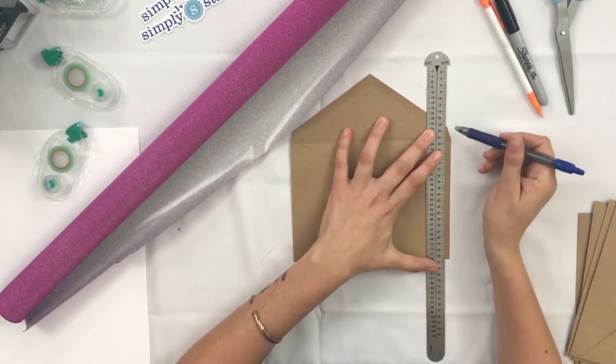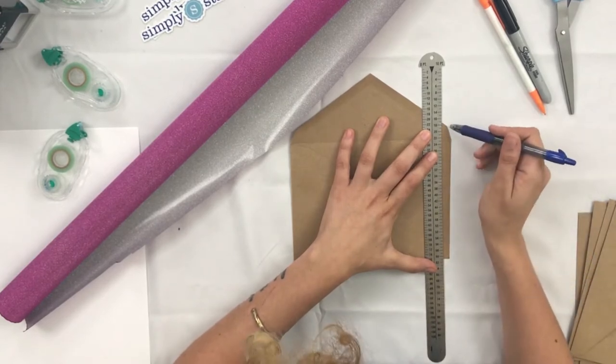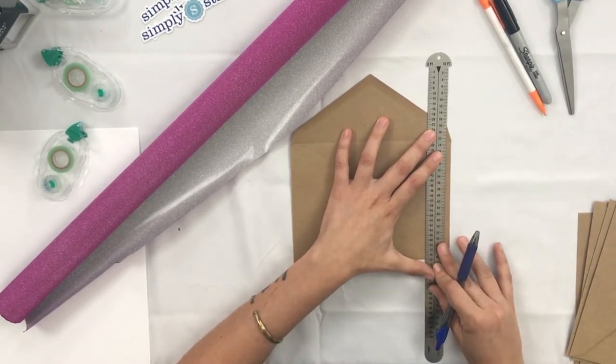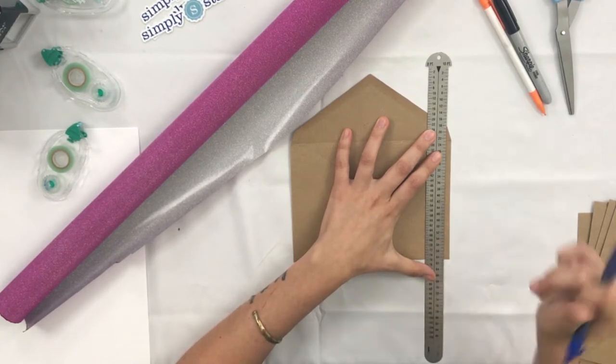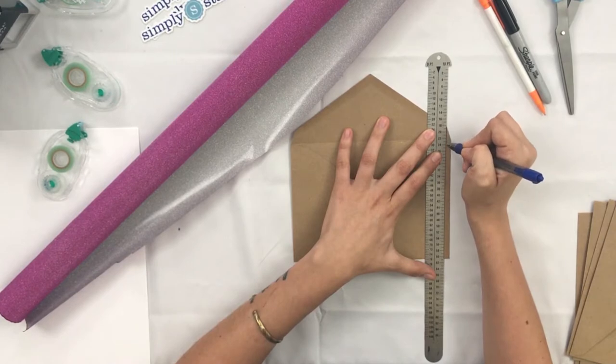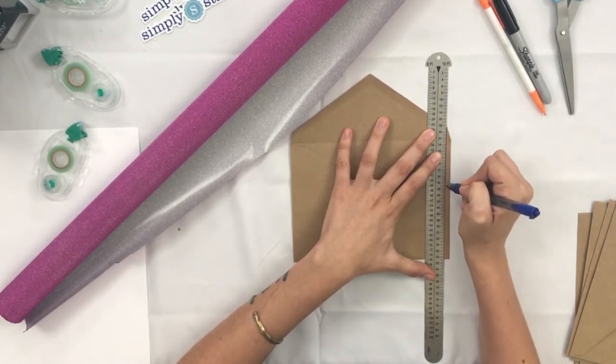So first things first you want to take your ruler and line it up along this line here and you're going to want it to be with the corner of the envelope flap. So very carefully just draw a straight line from the very top down to the bottom.